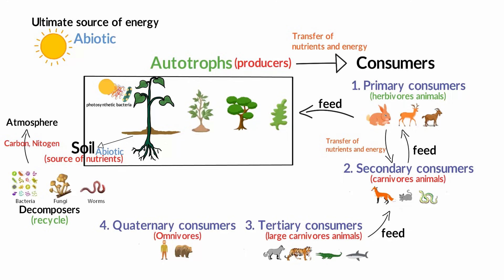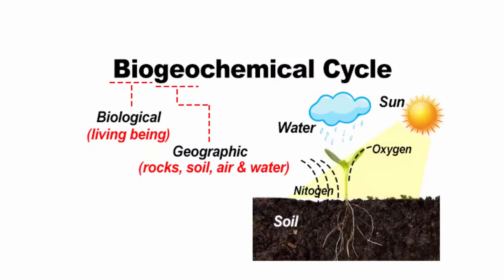After you die, all these chemicals are returned to the air, water and soil through decomposition. This entire cyclic movement of chemicals between the abiotic and biotic components of our environment is referred to as the biogeochemical cycle.